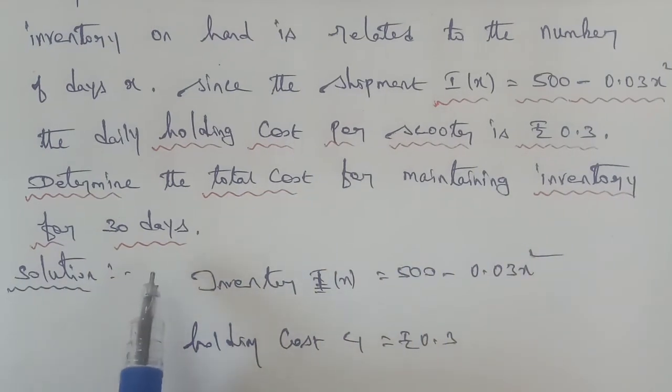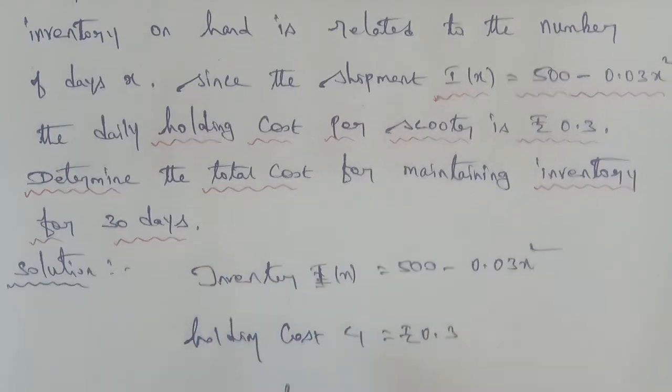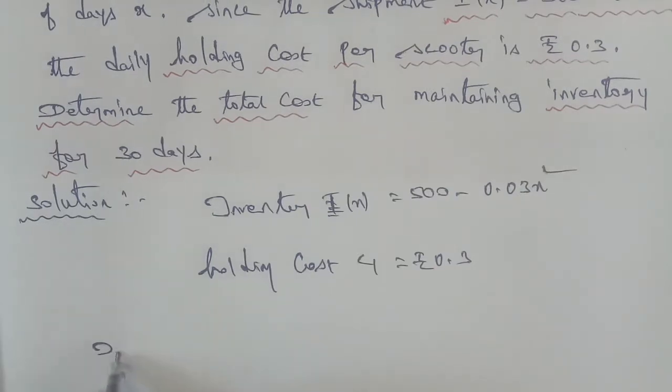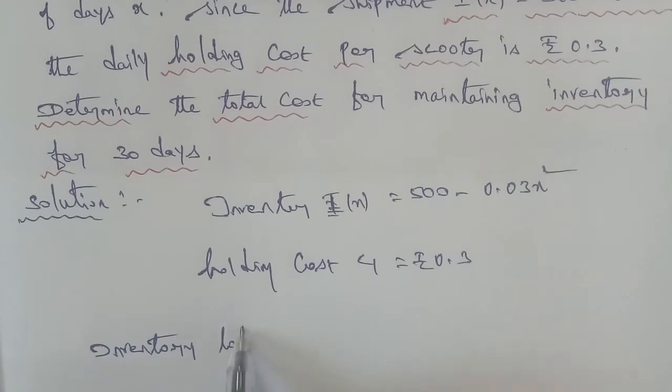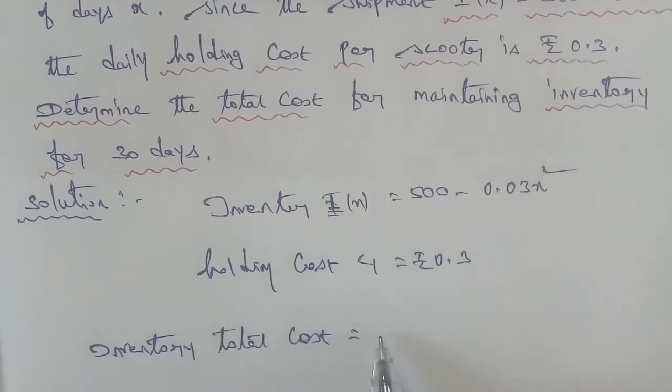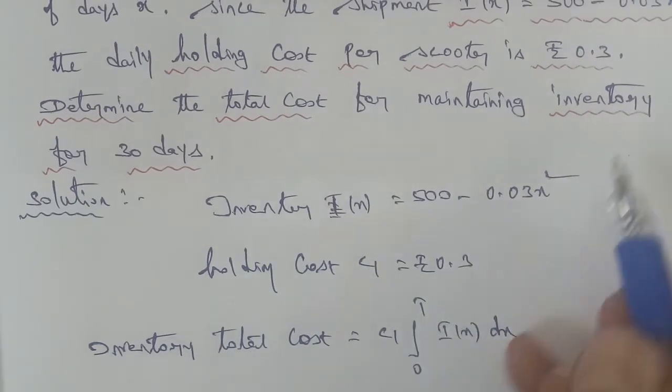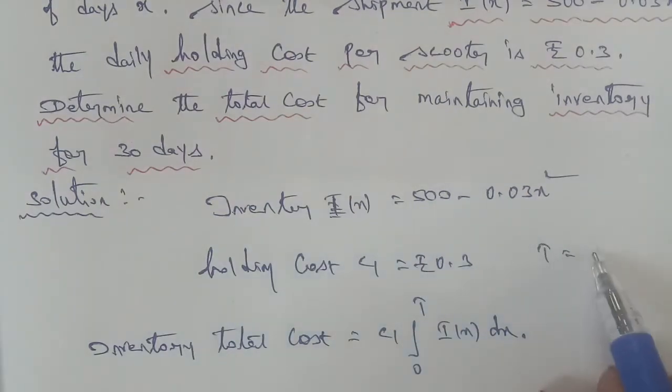This is a direct formula, the inventory total cost formula. C1 integral 0 to T, that is I(X) dX. So it is a direct formula, and the interval T value is T = 30.